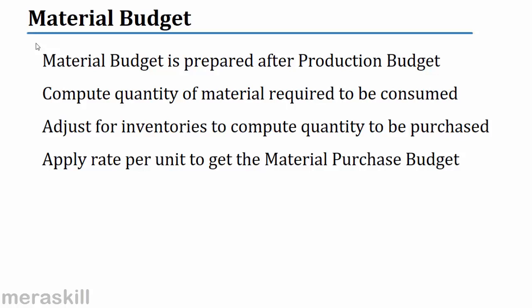For example, if I make 10,000 units and I need one pound per unit, then I will need 10,000 pounds. So the material budget is prepared after preparing the production budget.